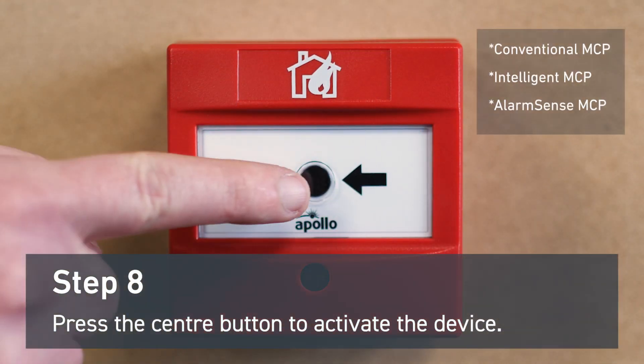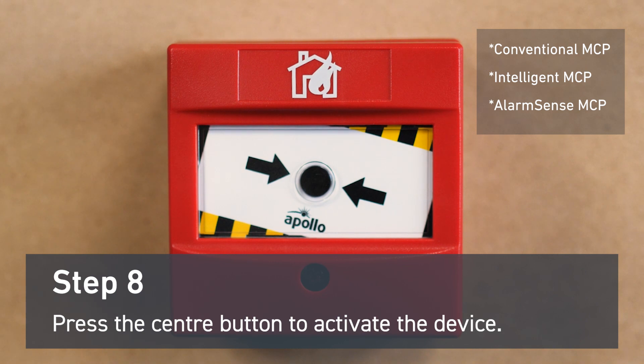To activate the device press the center button. This will click into place and show yellow and black stripes to indicate that the manual call point has been activated.